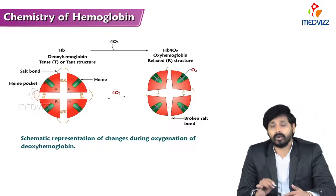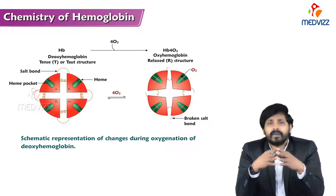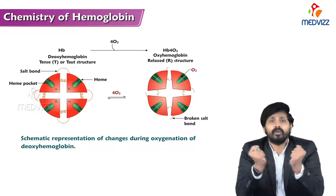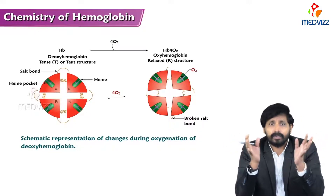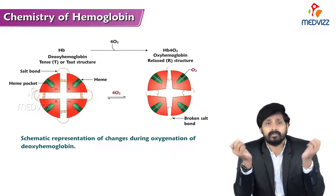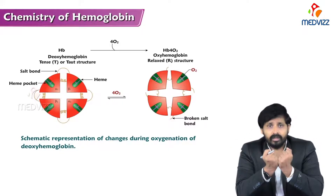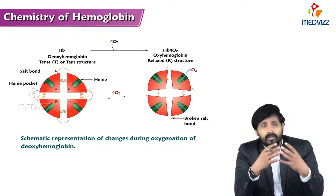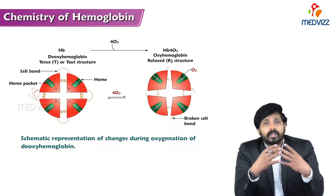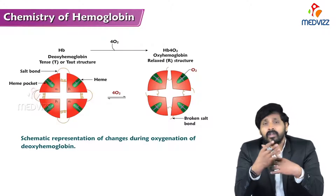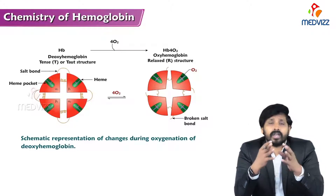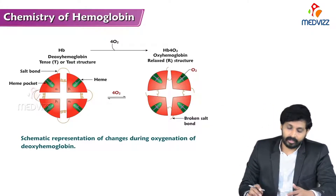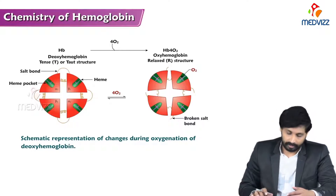When oxygen binds to the heme part of hemoglobin, the non-covalent bonds — salt bridges and hydrogen bonds — are broken. The globin chains are pulled together into a relaxed form. The binding of oxygen to the heme molecule breaks all these bonds and relaxes the globin chain, which is why oxyhemoglobin is known as the relaxed form.